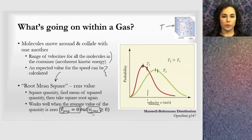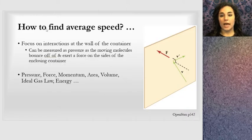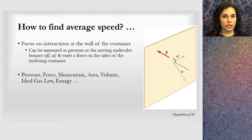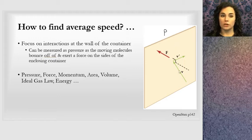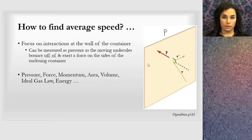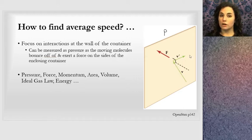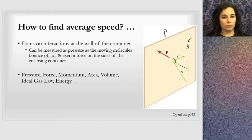You will see this term v_rms, which means root mean square. You're probably wondering how to find the average speed. The key is to look at collisions with the wall. We're focused on interactions because we can measure pressure—if you have a balloon, there's a pressure difference between inside and outside. Pressure is caused by molecules bouncing off the container wall, exerting a force on that wall. The container wall has an area A, we have pressure, volume, force, and some momentum going on.